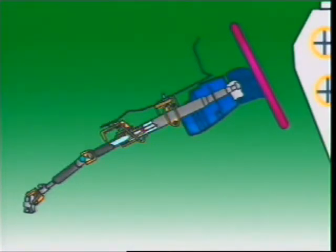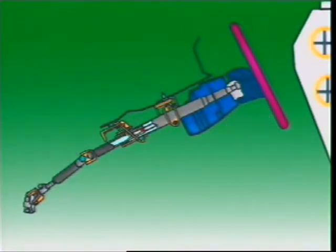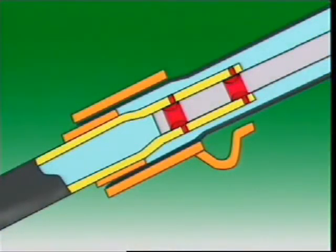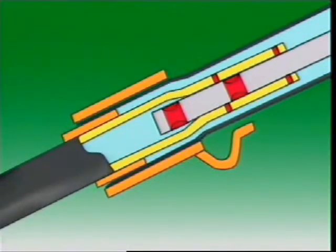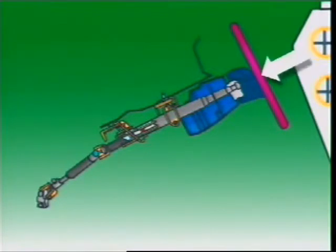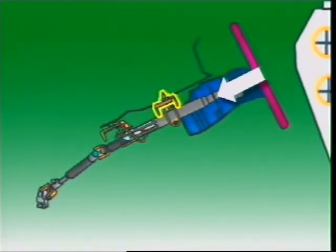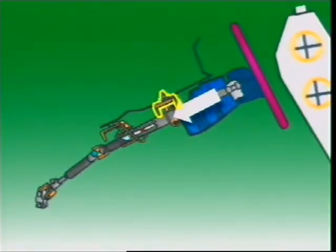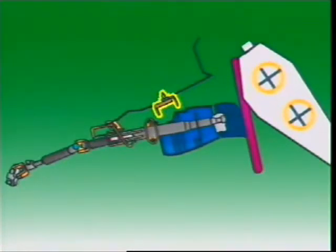During a collision, two forces are applied to the steering column. The first is the force of the steering box being forced back towards the steering column and towards the driver. Plastic shear pins allow the lower shaft to move over the upper shaft. The second force is the mass of the driver striking the steering wheel. This force breaks the brackets on the upper part of the column, driving the upper column into the lower column.